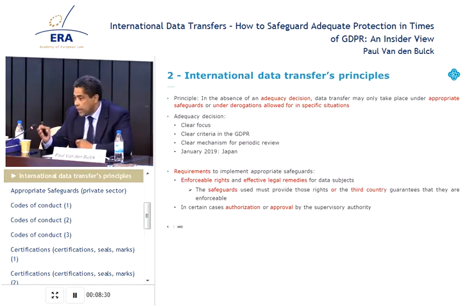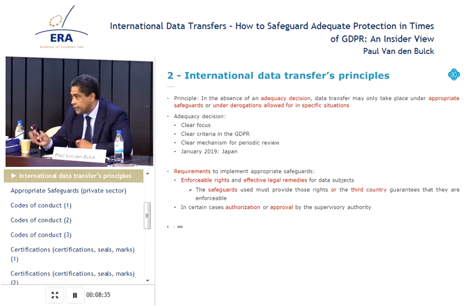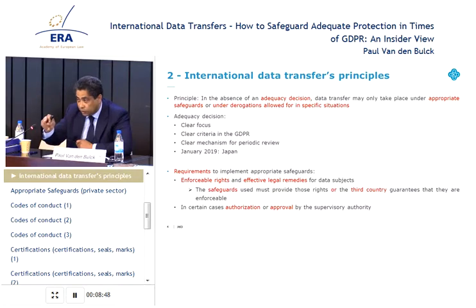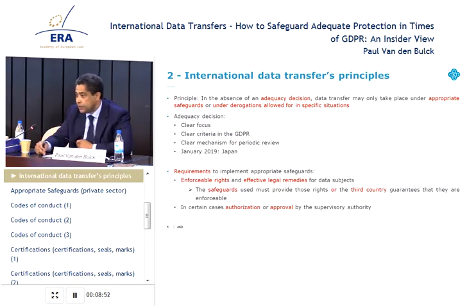Based on all these criteria — and it was already mentioned this morning — Japan, despite the fact that it is not a member of Convention 108, obtained an adequacy decision. Some other countries are in the pipeline, and the review will be done according to these criteria now in black letter in the GDPR or in the communication of the Commission.